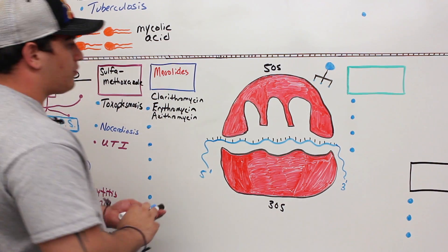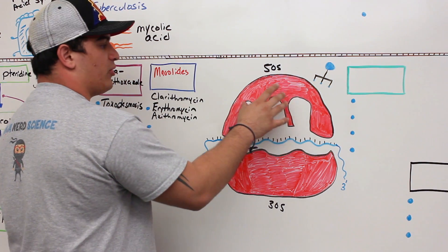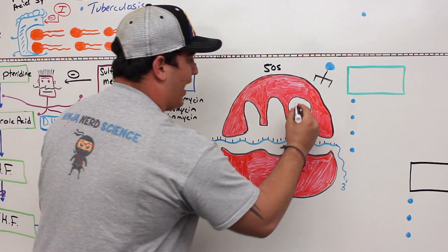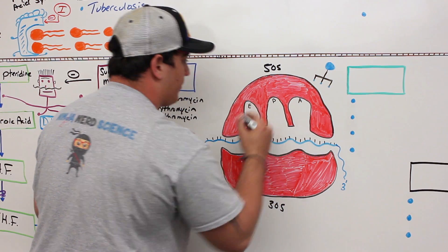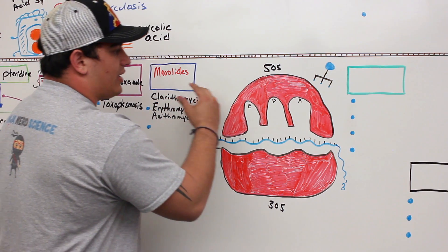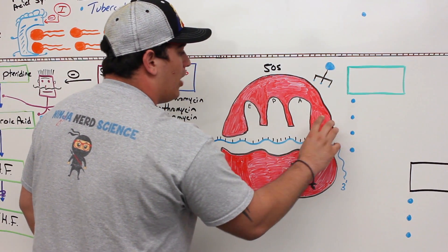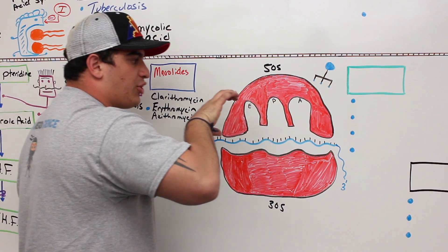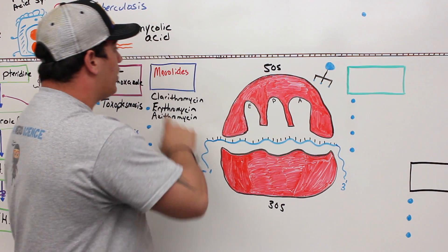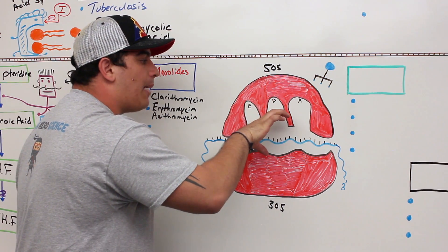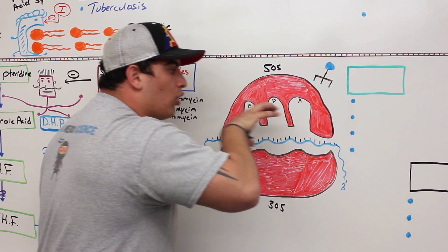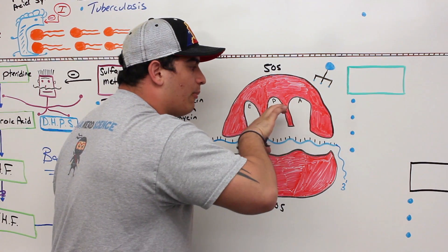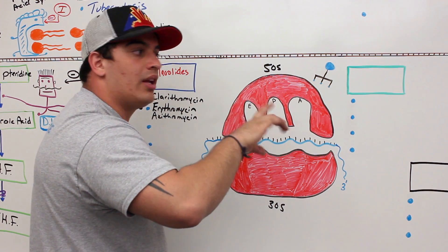What macrolides specifically do is attack the 50s ribosomal subunit. The ribosome has an A site, a P site, and an E site, and it moves along the mRNA to synthesize proteins. These macrolides inhibit the ribosome from moving and elongating the peptide chain — they inhibit it from reading or moving along the mRNA — so it can't synthesize a functional protein.